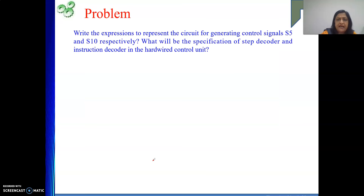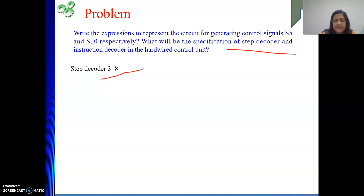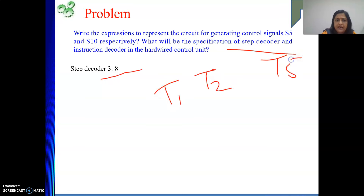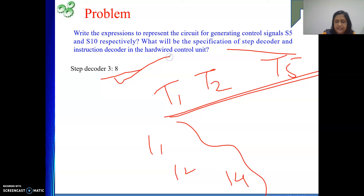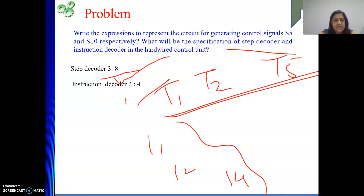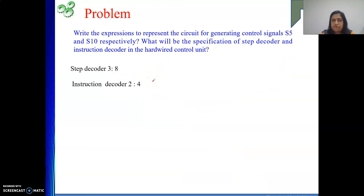To recap: the step decoder is 3-to-8 because we have T1 through T5 — five steps requiring three input bits — and the instruction decoder is 2-to-4 because we have four instructions I1 through I4. Four instructions and five steps fully determine the decoder sizes. This numerical is clear and straightforward once you understand the terms.